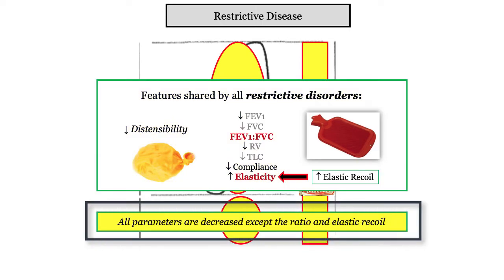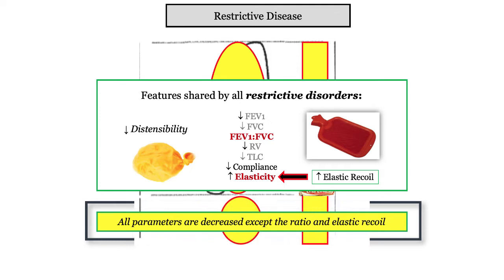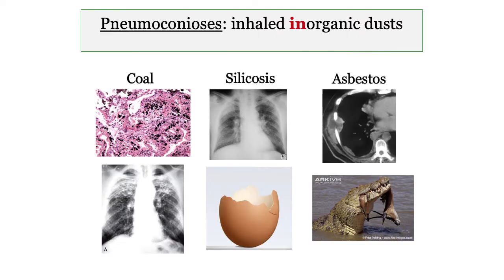To summarize, in restrictive disease, all parameters are decreased except the FEV1 to FVC ratio, which is normal, and the elasticity, which is described as increased. With that information out of the way, let's dive in.